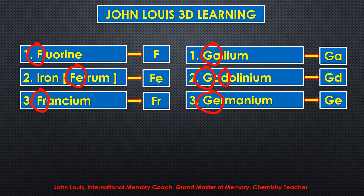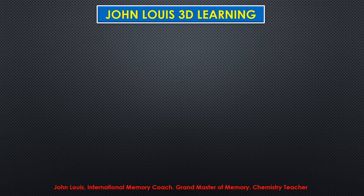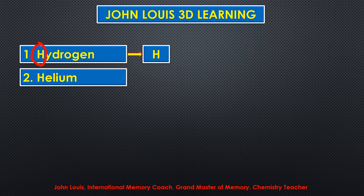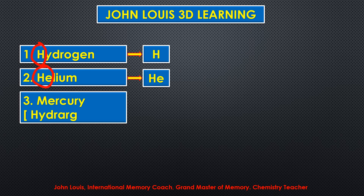Elements starting with H: hydrogen — H (single letter). Helium — He (H already taken). Mercury (hydrargyrum) — Hg: H from 'hydrar' and G from 'gyrum', giving the symbol Hg.